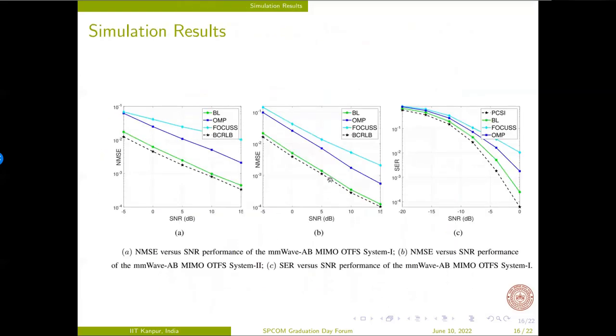These are our simulation results. One can observe that the proposed Bayesian learning procedure for the MMWave AB MIMO OTFS systems yields the best CSI estimation accuracy and symbol error rate close to that of the perfect CSI.